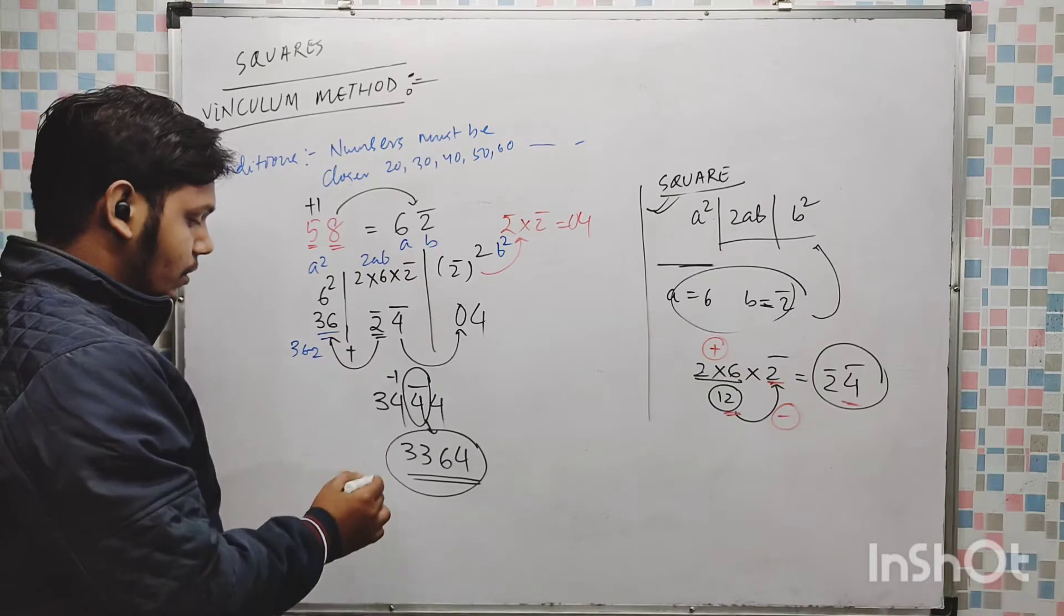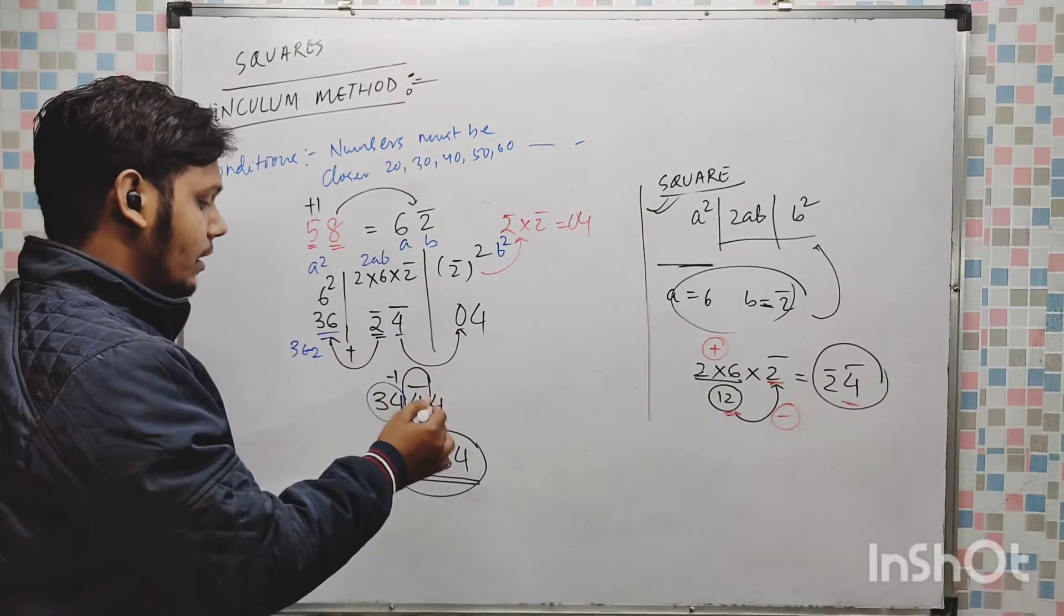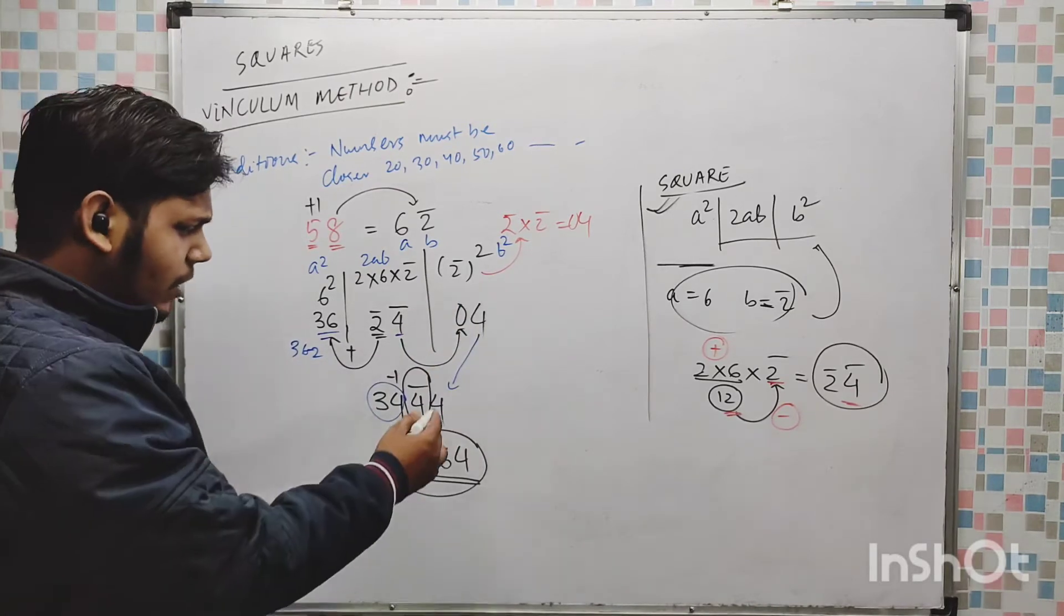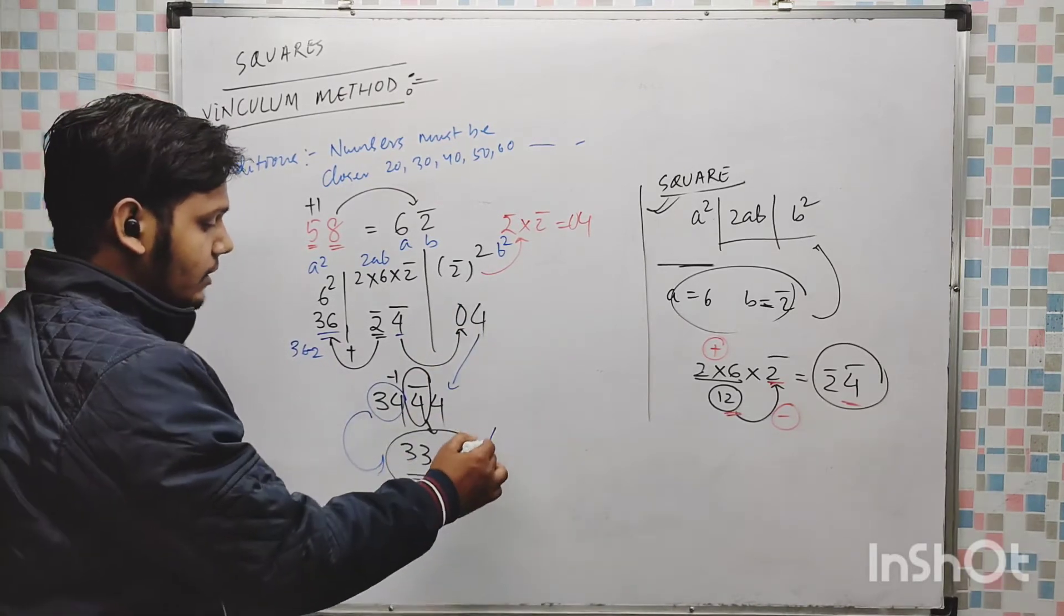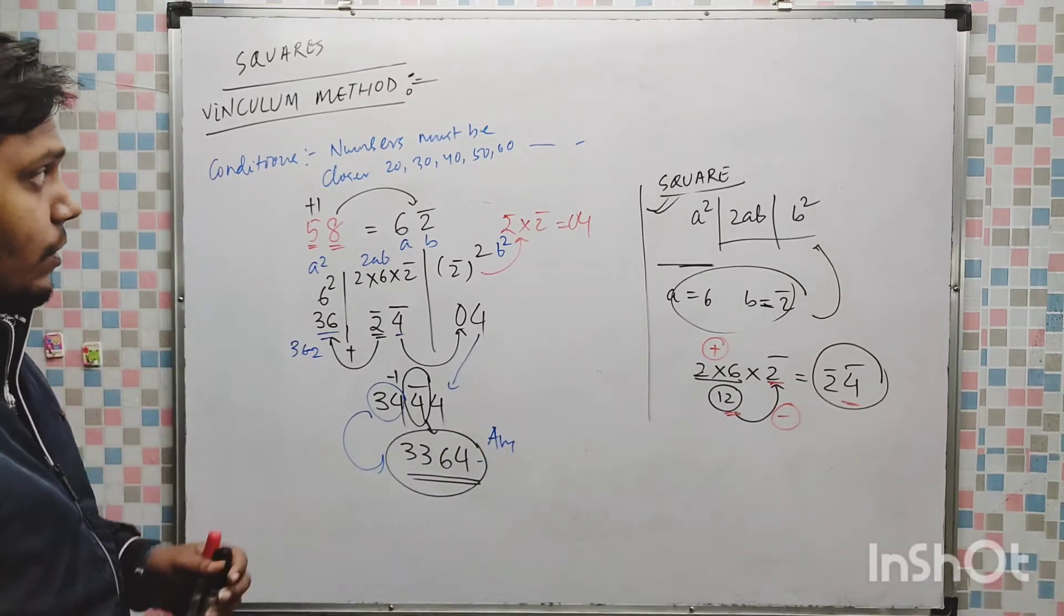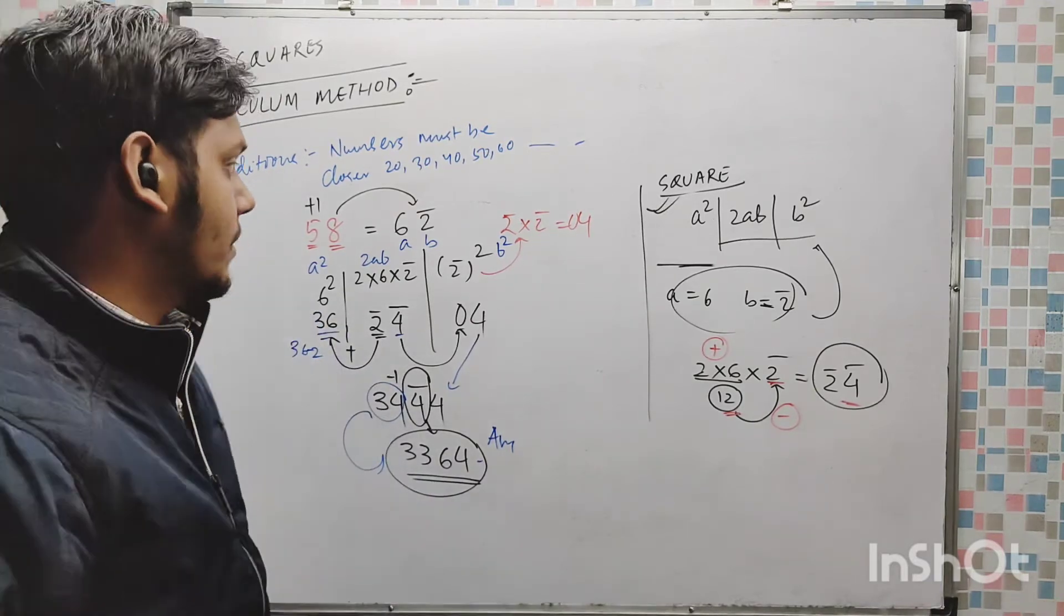Then simply I have balanced. Here 36 minus 2 is 34, and 4 bar and 4 bar, and thereafter ultimately this 4. Now I will include this number and this is the answer. One or two more examples will do so that we will get it properly.